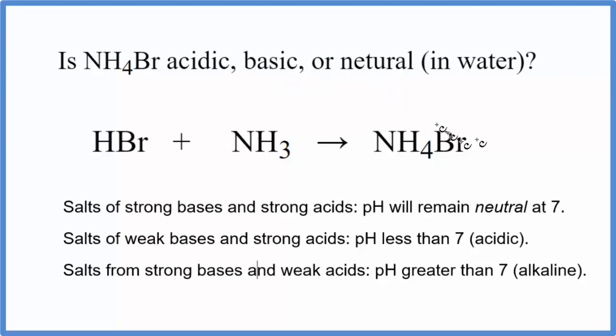To do that we need to know the equation that created the ammonium bromide. So here we have HBr, that's hydrobromic acid, plus NH3, ammonia, and that gives us our salt, NH4Br.